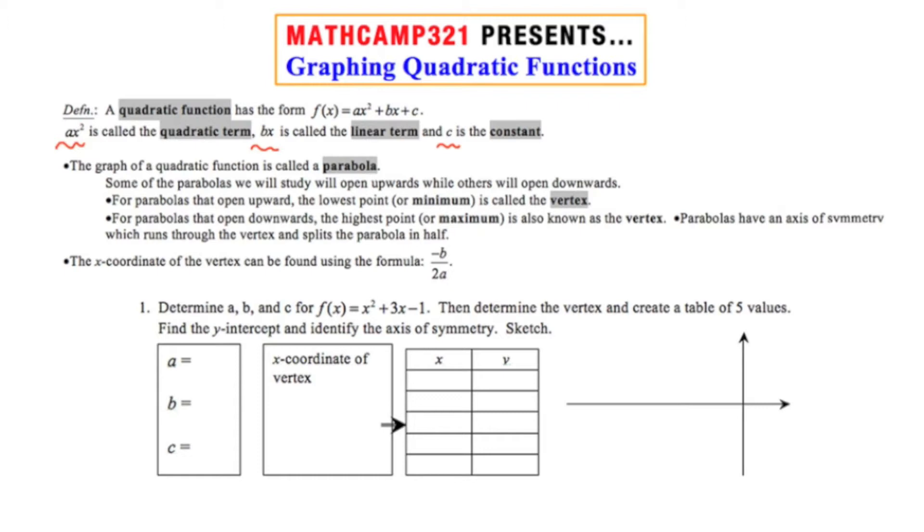The graph of a quadratic function is called the parabola. Some of the parabolas we will study will open upwards, while others will open downwards. For parabolas that open upward, the lowest point, or minimum, is called the vertex. For parabolas that open downward, the highest point, or maximum, is also known as the vertex.